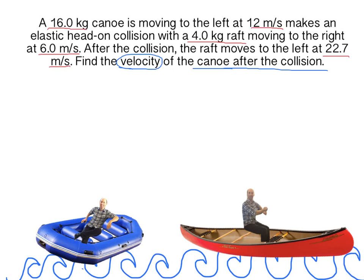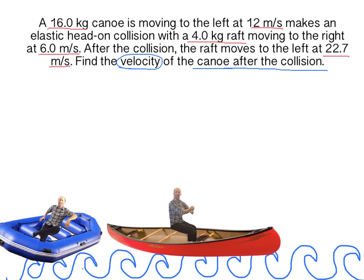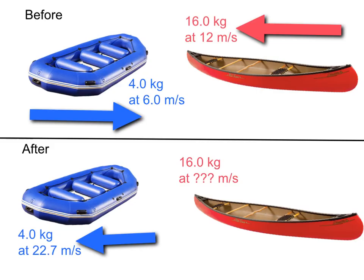Let's look at an example now. Let's break it down to before and after. Because the raft is moving to the right, it's going to be positive, and the canoe is moving to the left, so it's going to be negative.